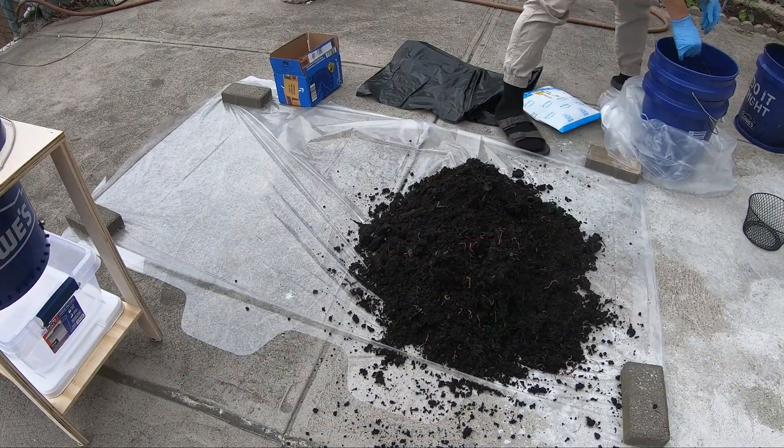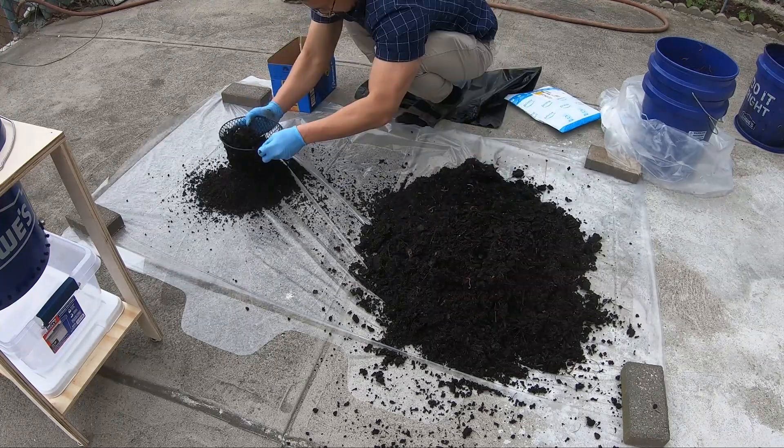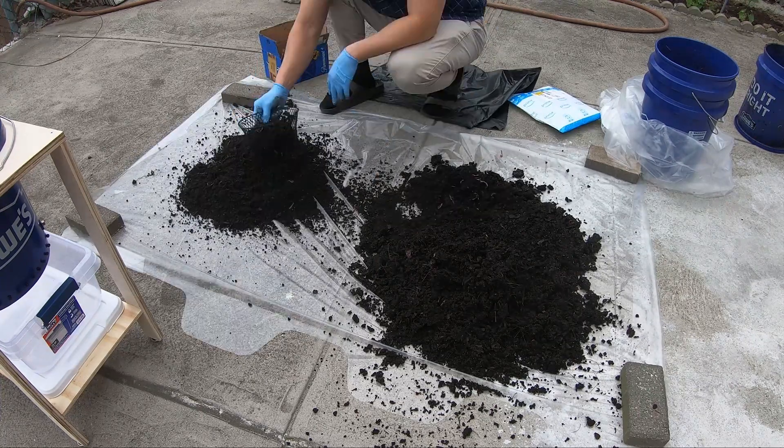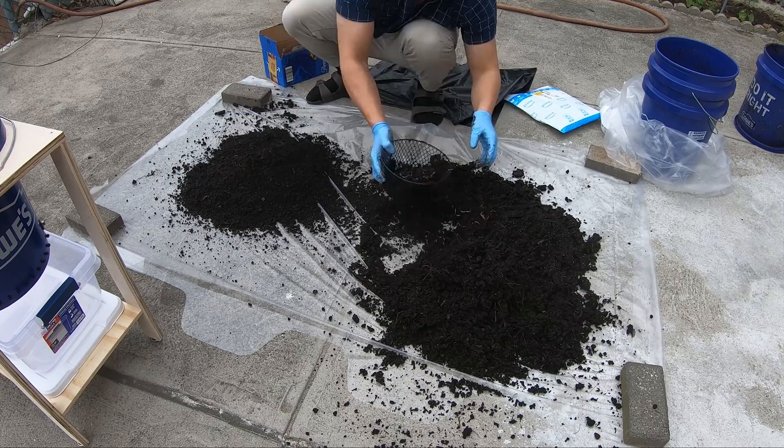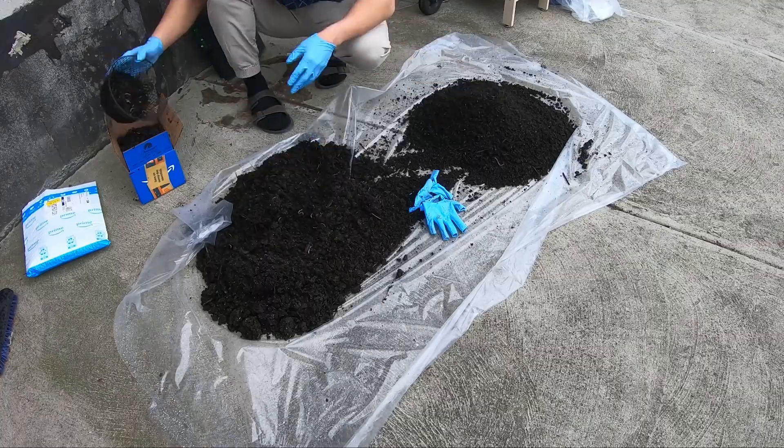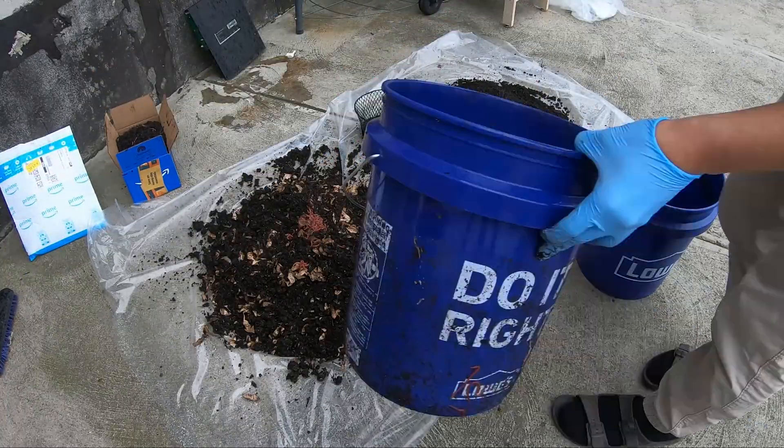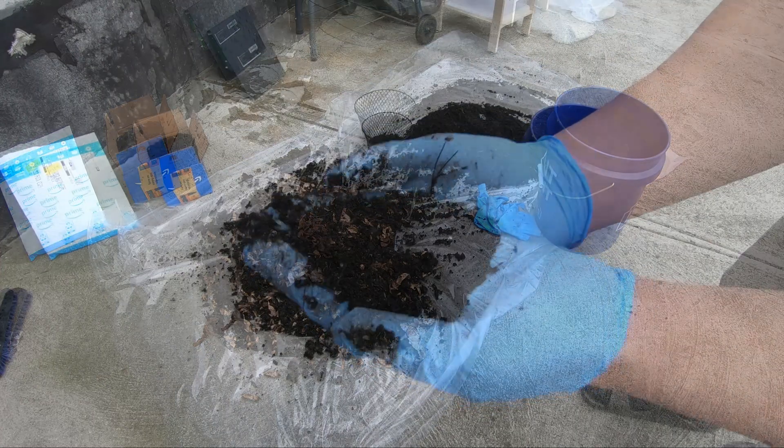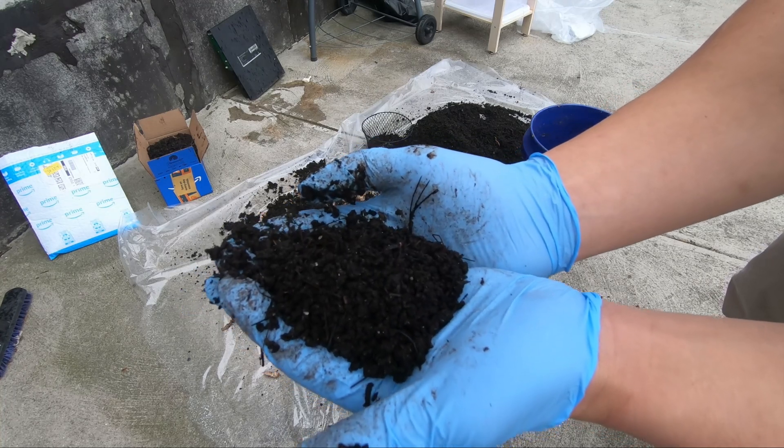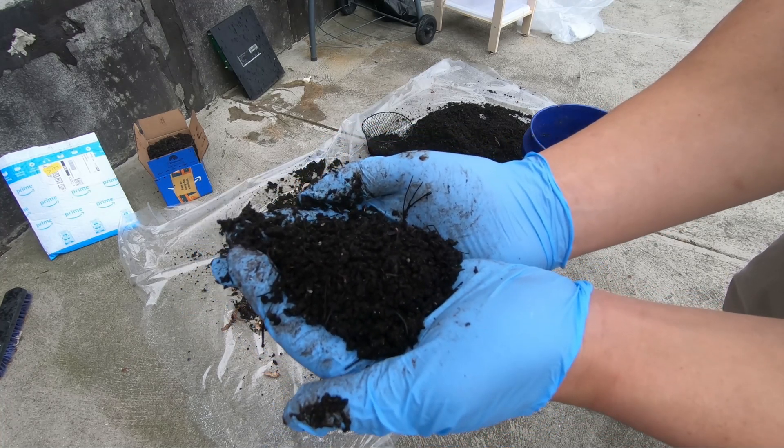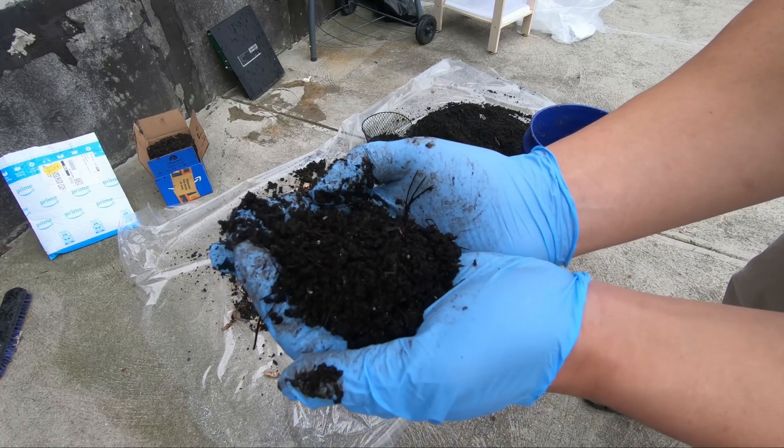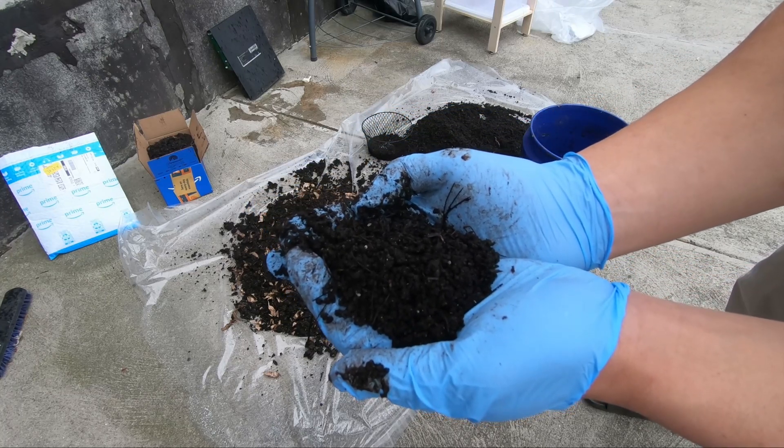What you see me doing here is separating the worms from the castings. I started this bin in September of 2020, so most of the bin is castings. This gives me opportunity to leave some castings aside for my garden, and I'm also adding shredded paper and powdered oyster shells just to control the pH and moisture. Look at the quality of these castings. In the vermiculture world, this is referred to as black gold due to how nutritious it is. I'm going to put this in a bucket for later, and then I'm going to go ahead and fill up the CFT composter with the remainder of the castings and the worms.